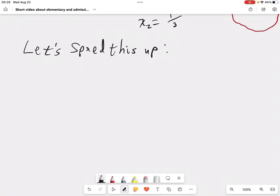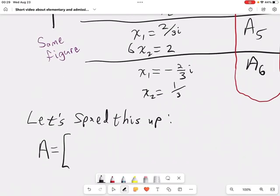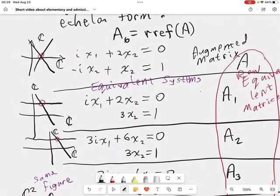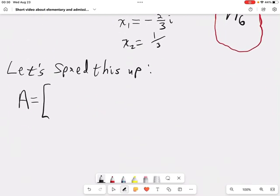So let's begin with the matrix A again. I'll need to look back at what it was because I've forgotten. I can see it in that original system. The first column is i, -i. The second column, 2, 1. And the right-hand sides are 0, 1. So i, -i, 2, 1, 0, 1.